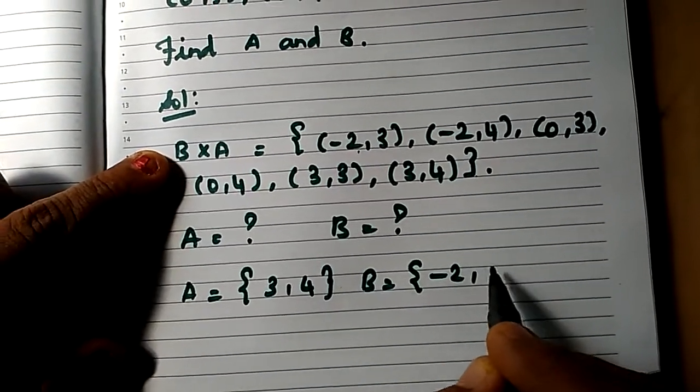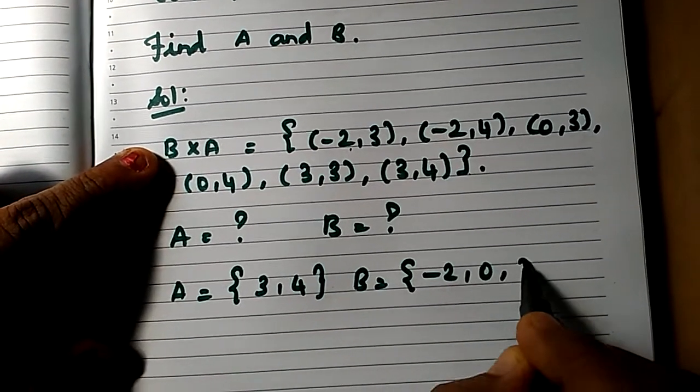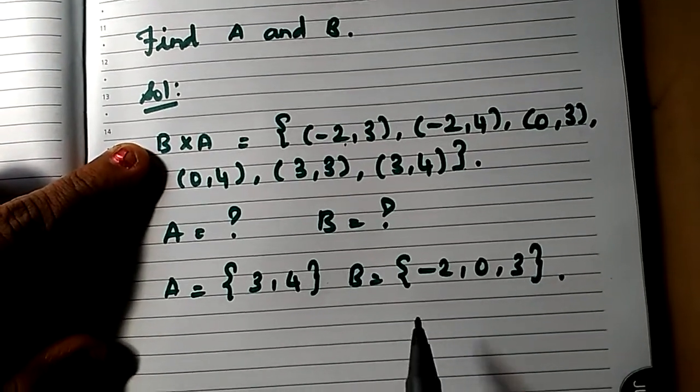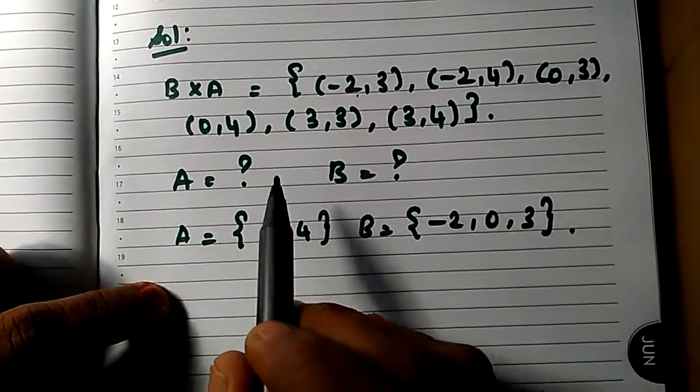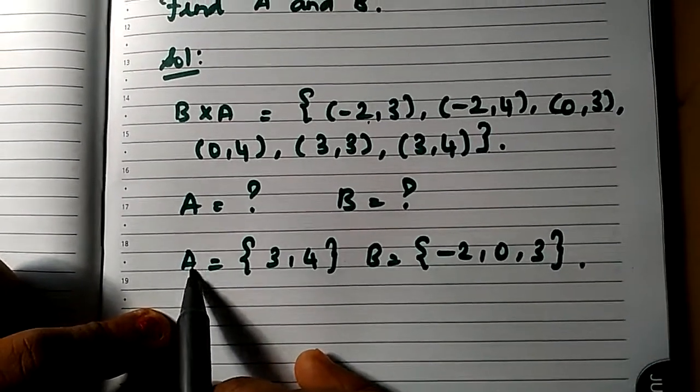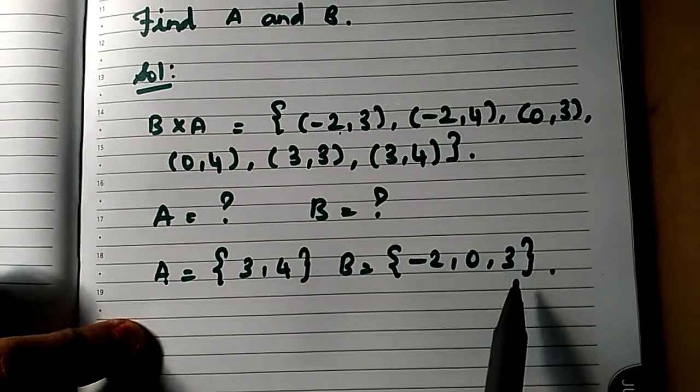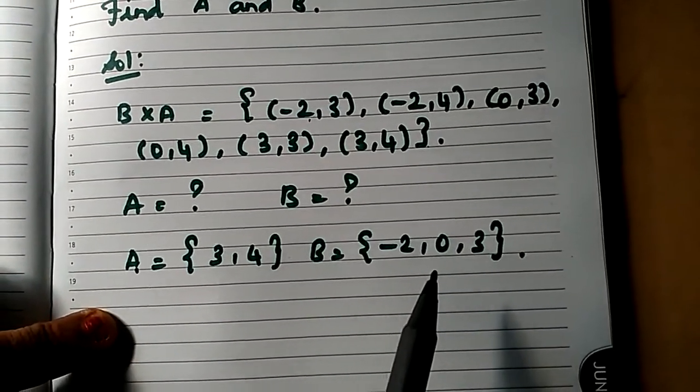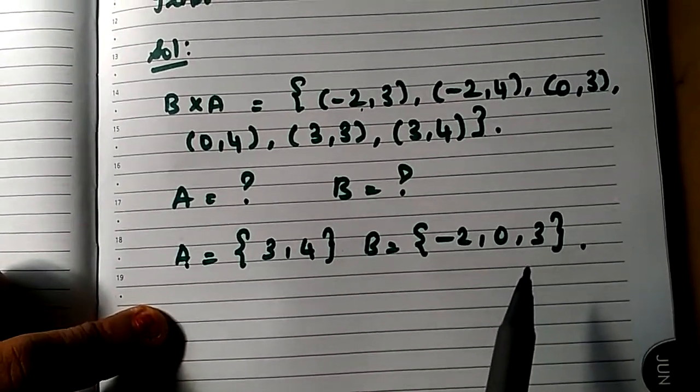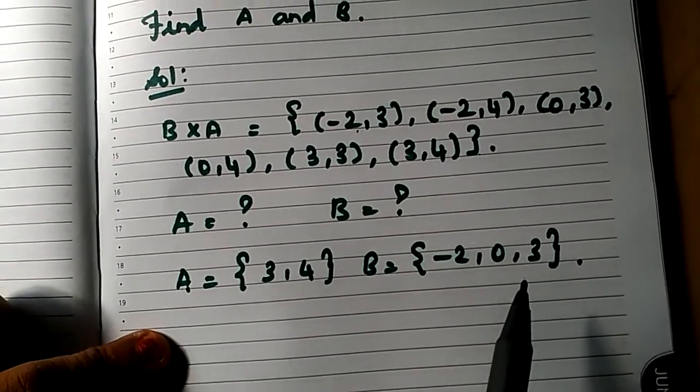So set A is equal to 3 comma 4, set B is equal to minus 2 comma 0 comma 3. Thanks for watching, like it, share it, subscribe it for getting the upcoming videos. Enjoy maths with the ER math world.